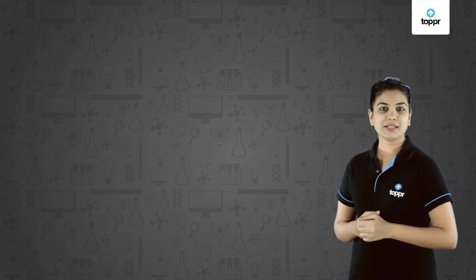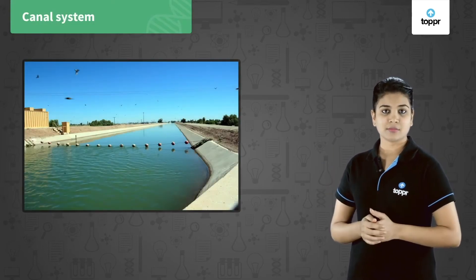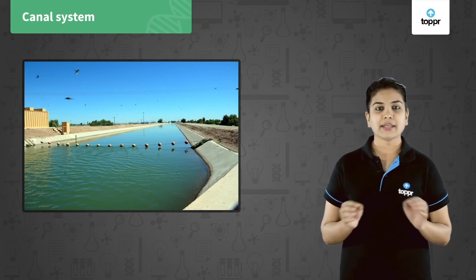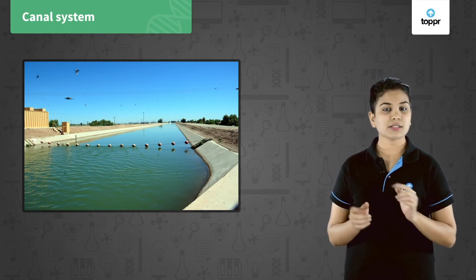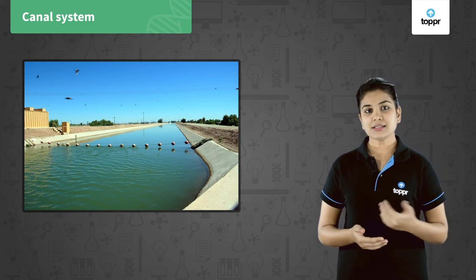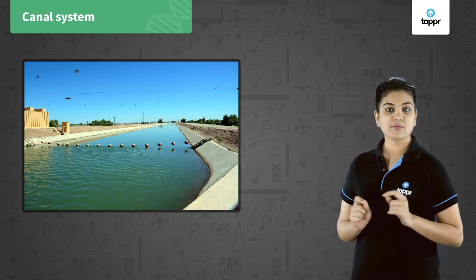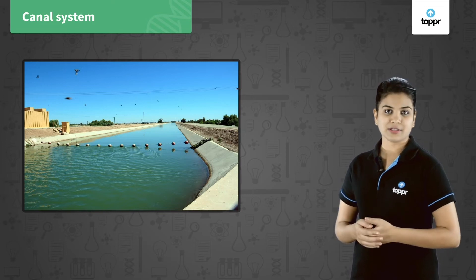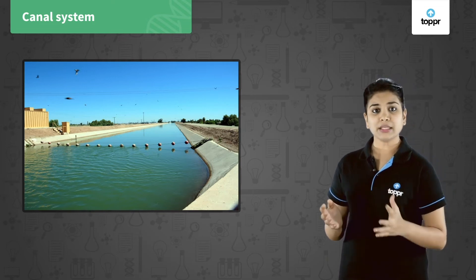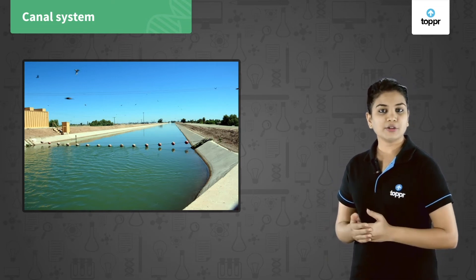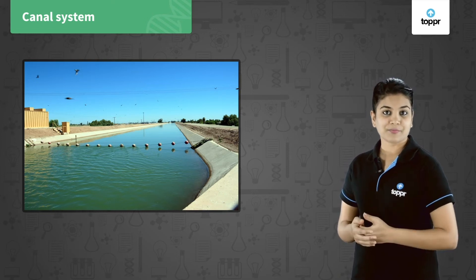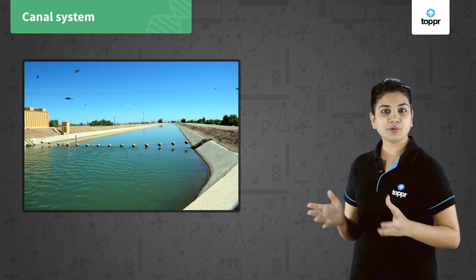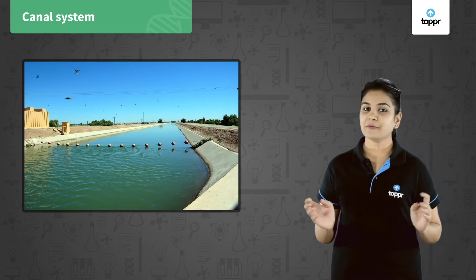The third system is the canal system. It is usually an elaborate and extensive irrigation system. The canal receives water from reservoirs or from rivers. The main canal is divided into branch canals, which are further divided into distributaries that irrigate the fields.